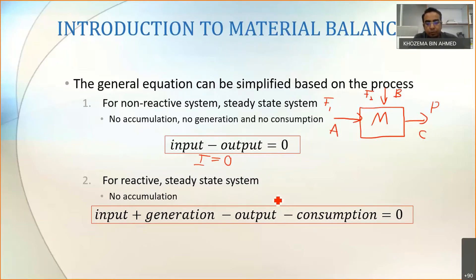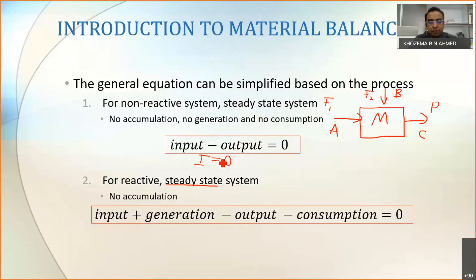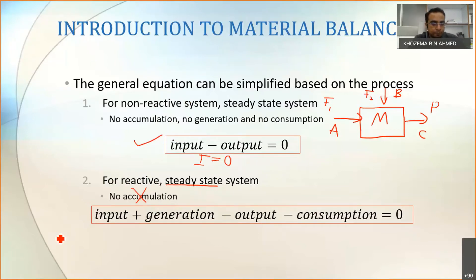For a reactive steady-state system, the equation becomes: input plus generation minus output minus consumption, with still no accumulation because the system is steady state. Most systems in industry can be considered steady state, so it's rare to find an unsteady-state process in industry. Moving forward, all our processes will be for steady-state systems, meaning we'll never have the accumulation term. We'll start with non-reactive systems first, and after mastering those we'll move to reactive systems.